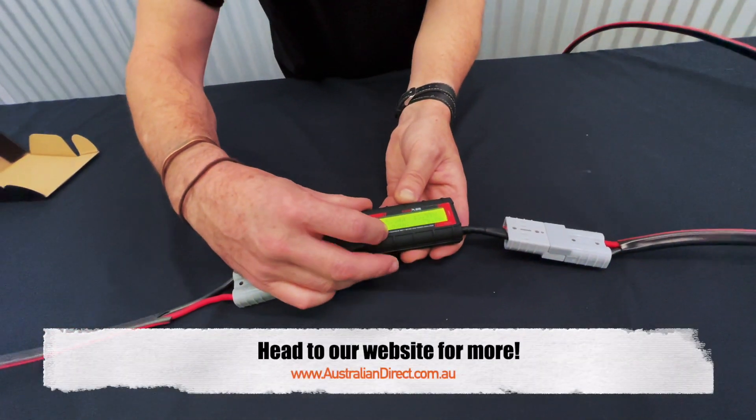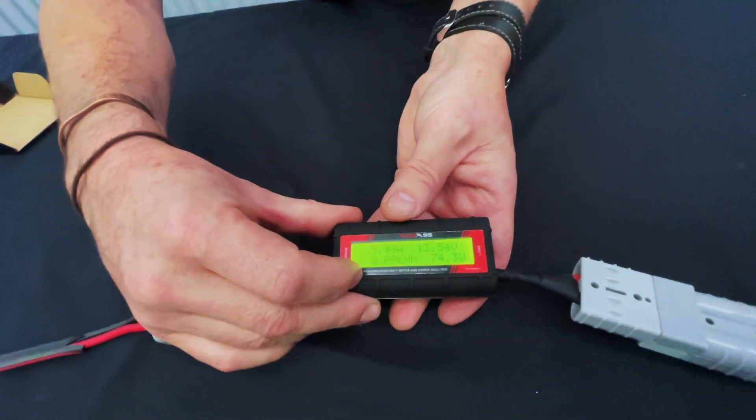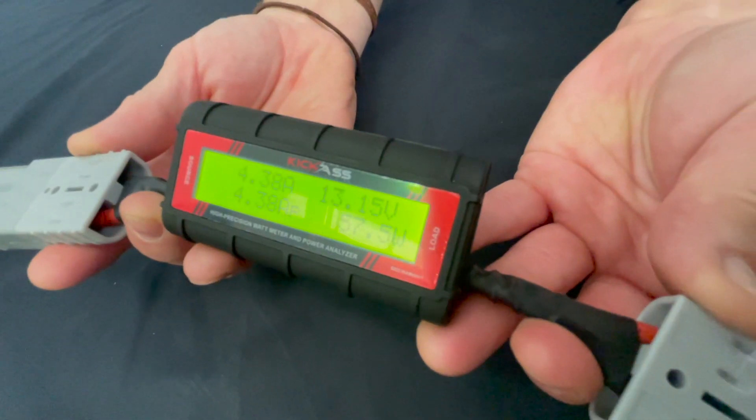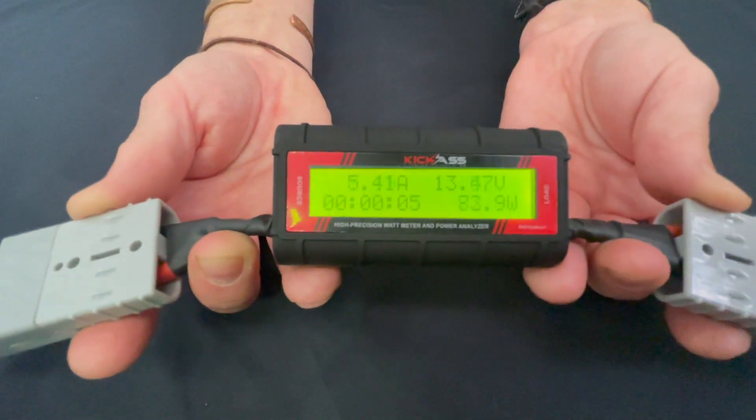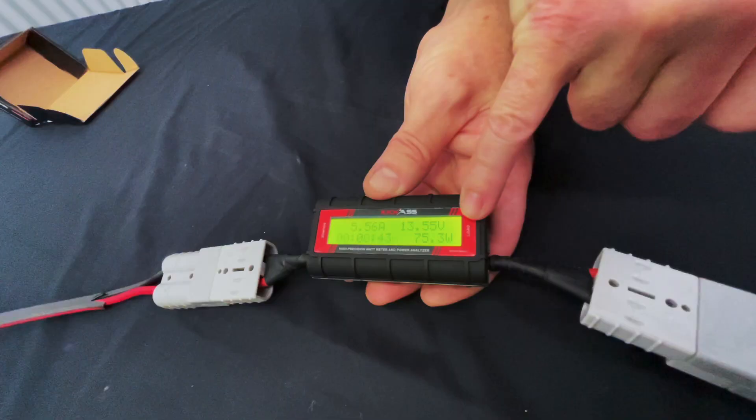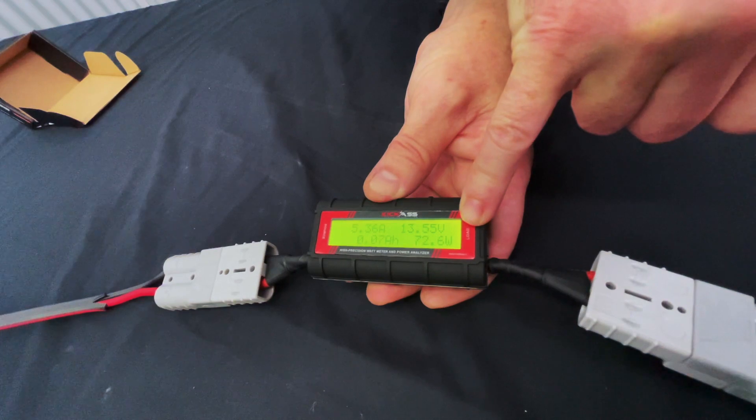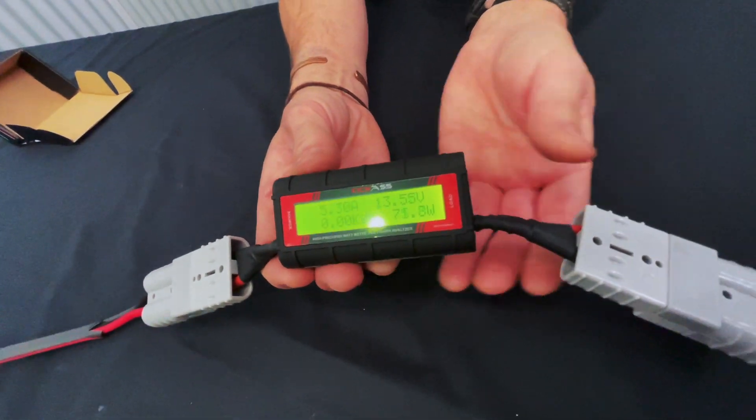We go through a couple measurements on here. So you've got your average volts, your minimums and your maximums. You've got also it'll tell you the time, the amount that you've had it on there for. Also the amount of watts that are actually going into my battery from my solar panel at the moment. So these things are absolutely fantastic.